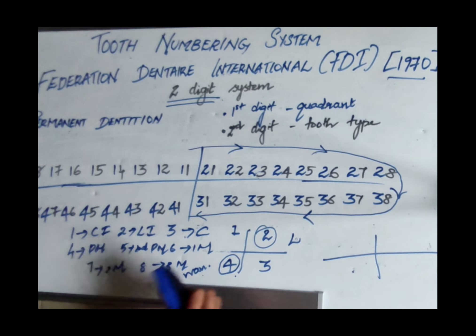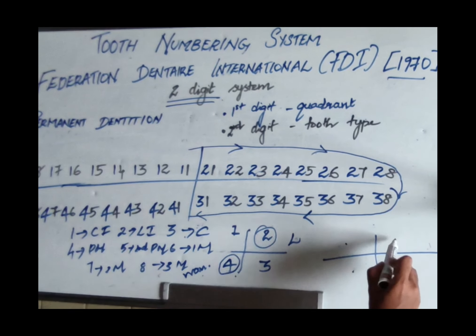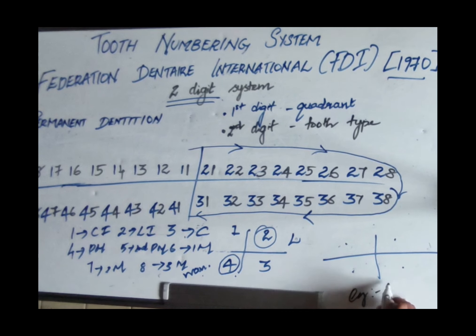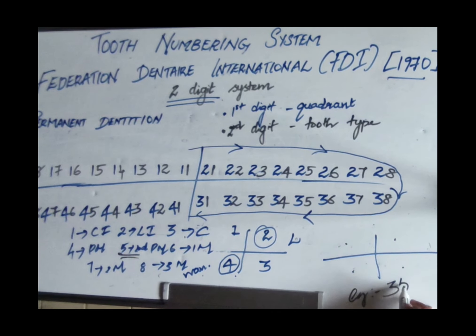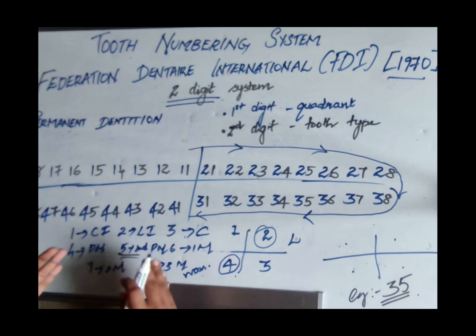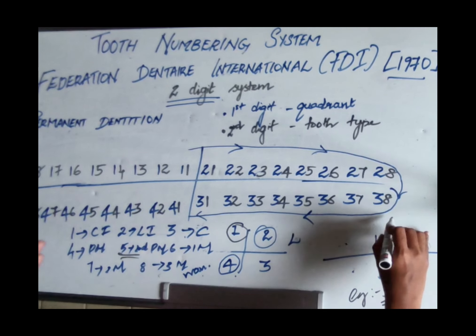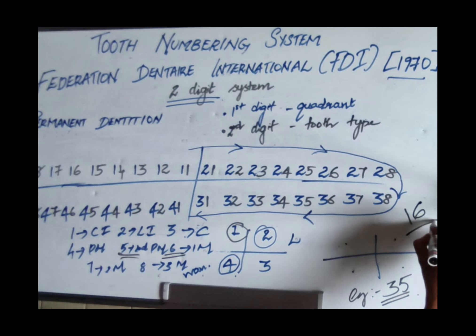Examples in the FDI permanent system: mandibular left second premolar — mandibular left is quadrant 3, second premolar is tooth number 5, so it is written as 3, 5. Maxillary right first molar — maxillary right is quadrant 1, first molar is 6, so it is 1, 6.